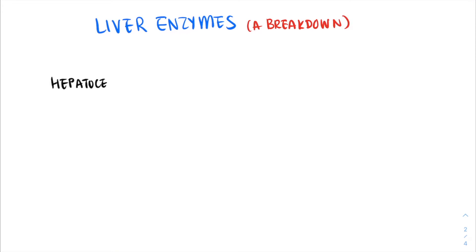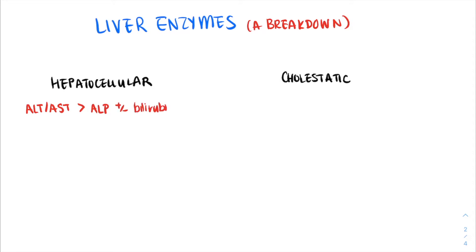There are two general patterns of liver enzyme elevation: hepatocellular and cholestatic. In a hepatocellular pattern, ALT and AST elevation is predominant, because both are highly concentrated in hepatocytes and injury causes direct release into the bloodstream. In contrast, ALP elevation is predominant in a cholestatic pattern. ALP is particularly concentrated in the liver, bile duct, and bone tissues. Once we rule out extra-hepatic etiologies, ALP is often raised due to increased synthesis in response to cholestasis, making it an indirect marker of cholestasis.